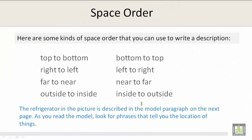Here are some kinds of space order that you can use to write a description: top to bottom or bottom to top; right to left or left to right; far to near or near to far; outside to inside or inside to outside.